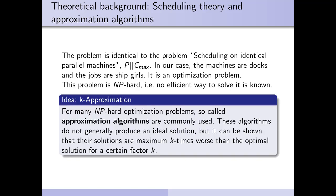For many NP-hard problems so-called approximation algorithms are commonly used. These algorithms do not generally produce an ideal solution, but it can be shown that their solutions are maximum k times worse than the optimal solution for a certain factor k. For many of these problems, one can construct efficient approximation algorithms. It's basically a way to save runtime by paying with precision.